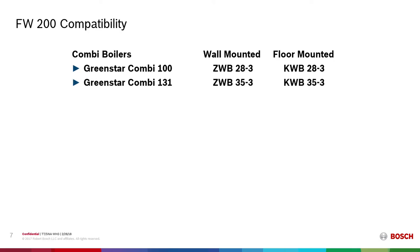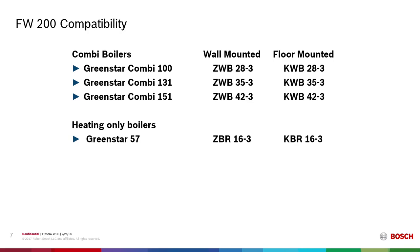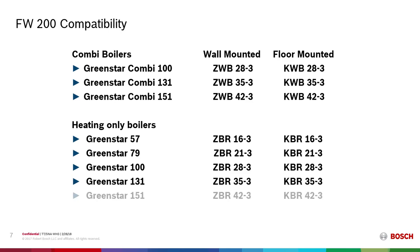The FW200 is compatible with the entire range of Green Star boilers. The range of Green Star boilers is extensive. We have combination boilers both wall-mounted and floor-mounted at 100,000 BTU nominal inlet. Wall-mounted and floor-mounted boilers at nominal 131,000 BTU inlet and 151,000 BTU inlet. We also have heat-only boilers starting at a nominal 57,000 BTU inlet, both wall and floor-mounted. A 79,000 BTU range, 100,000, nominal 131,000 and 151,000 BTU nominal inlet. Again, wall-mounted or floor-mounted versions of these boilers.